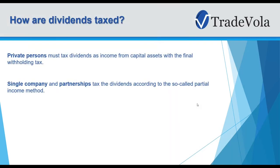How are dividends taxed? It depends on whether you're a private person or a company. A private person must pay tax on dividends as income from capital assets with a final withholding tax. If you receive a dividend from a US company, it will be taxed by the US first, and if the tax rate in your country is lower than what you paid in the US, you'll receive some money back. I'll also show you where to find this information in TWS.